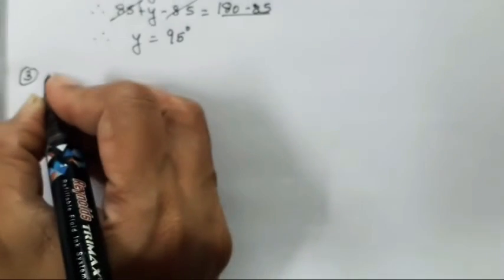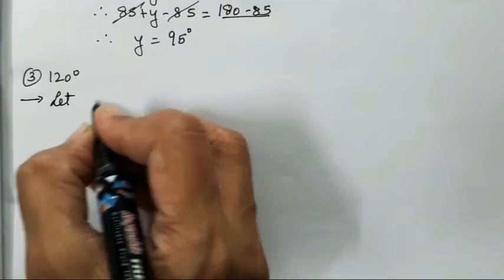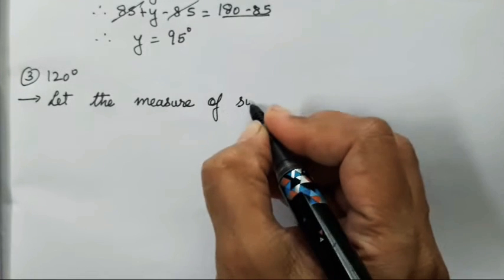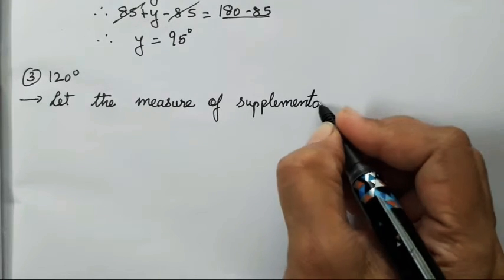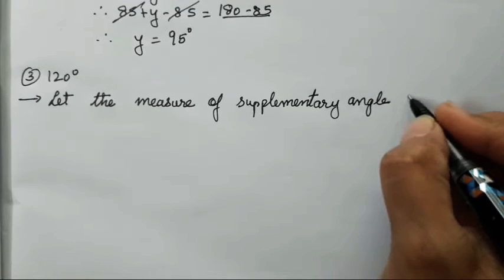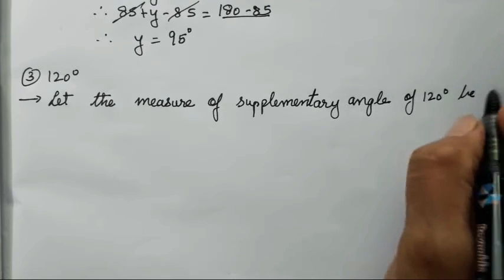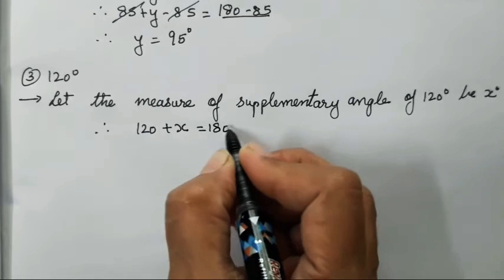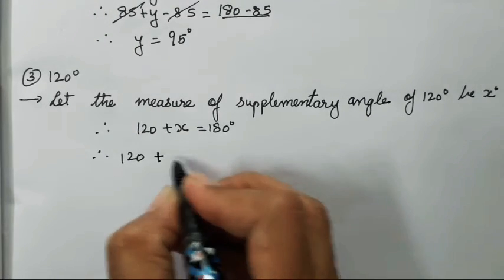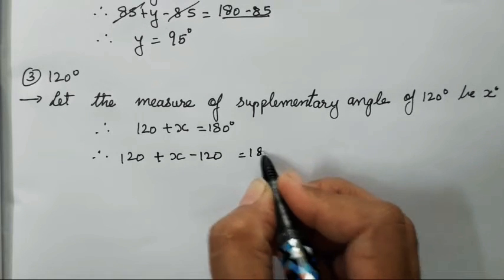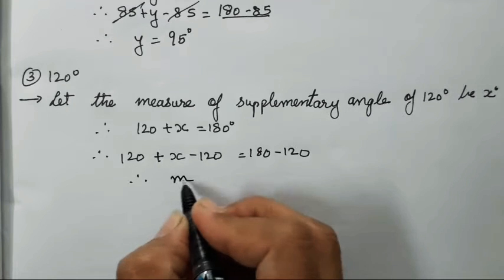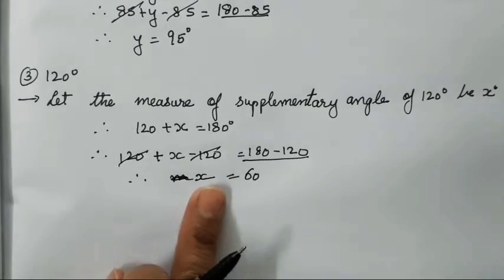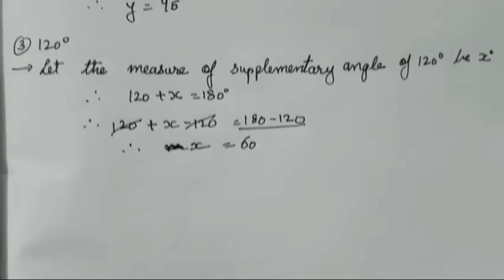Now the third sum is 120 degrees. Let the measure of the supplementary angle of 120 degrees be x degrees. Therefore 120 plus x equals 180 degrees. Therefore 120 plus x minus 120 equals 180 minus 120. Therefore x equals 60 degrees. So the supplementary angle of 120 is 60 degrees.